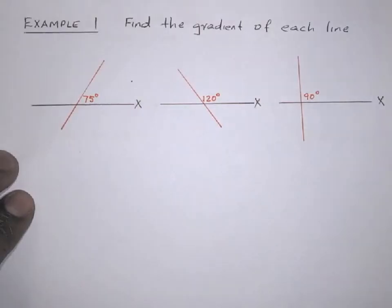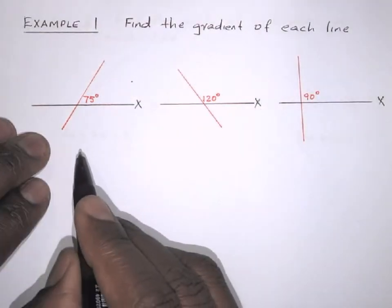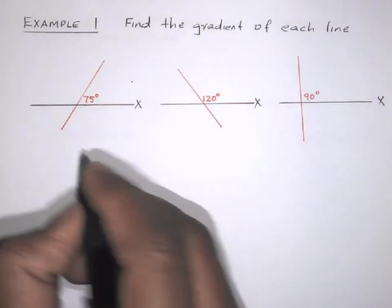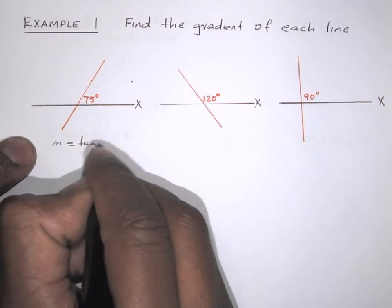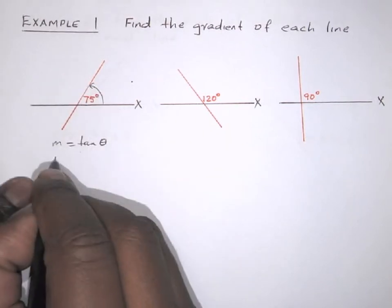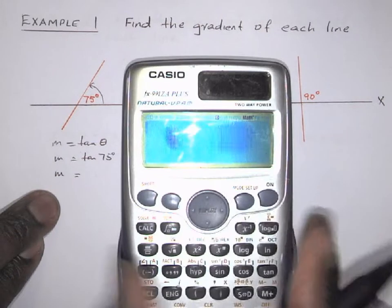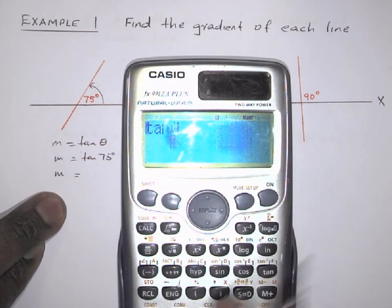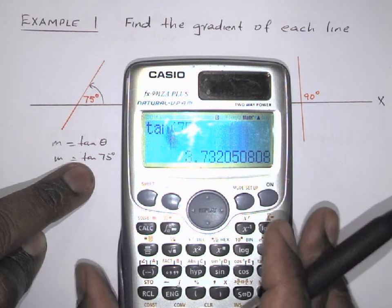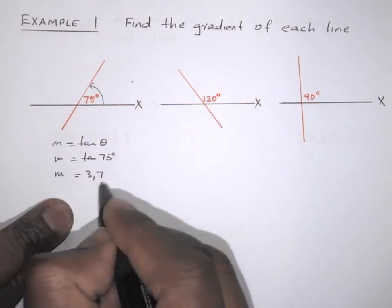Let's look at some examples. Here they say: find the gradient of each of the following lines. To find the gradient, we'll use the formula m equals tan of theta, where theta is the size of the angle of inclination. So m equals tan of 75 degrees, which is the gradient of that line, giving us 3.7. That is the gradient of that line.